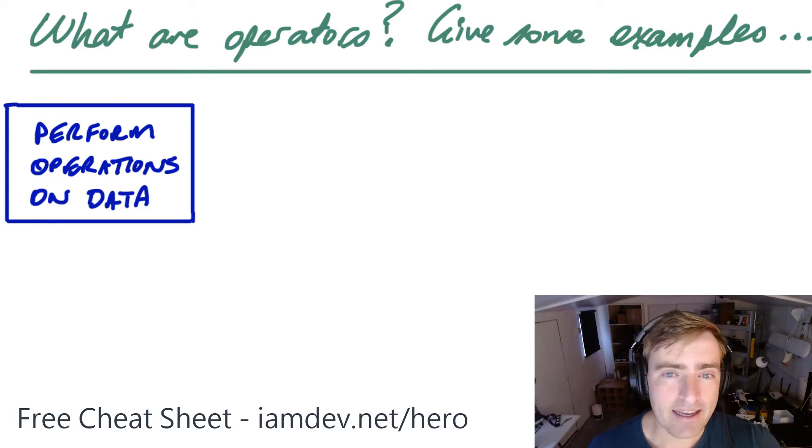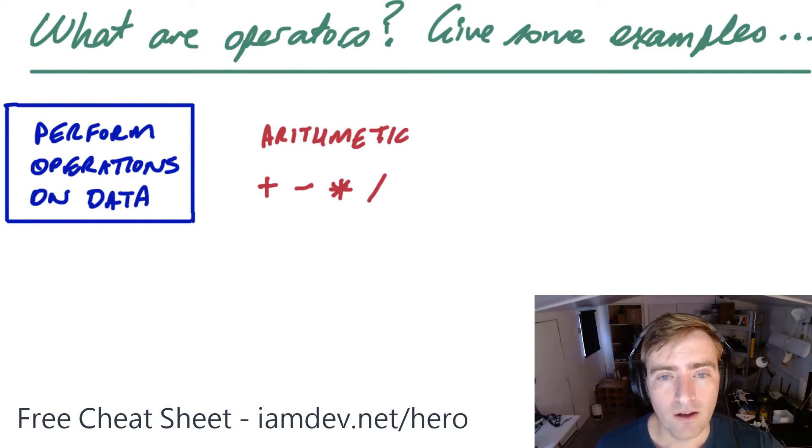And then they'll probably say, hey, give us an example. So you'll go something probably along the lines of arithmetic. So everyone knows this: one plus one, one minus one, one times one, one divided by one. Everyone thinks of arithmetic when they hear the word operator and they are their own class, arithmetic.